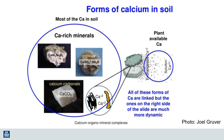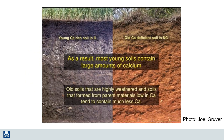As these calcium-rich minerals weather over decades, centuries, millennia, or even millions of years, they slowly release calcium in a soluble form that can then be taken up by plants. The geologic parent material has a lot to do with the calcium concentration in the soil, as well as other soil-forming factors such as the vegetation and the climate. As a result, most young soils contain a large amount of calcium, including the soils in the Midwestern United States.